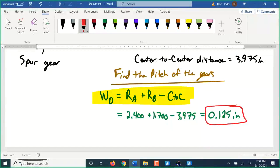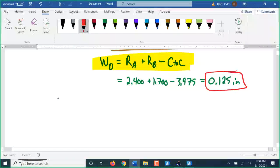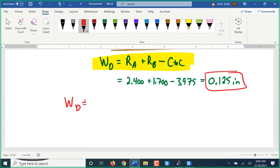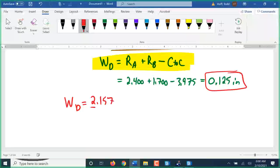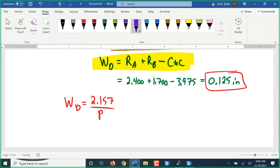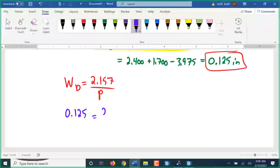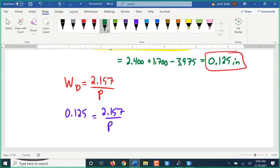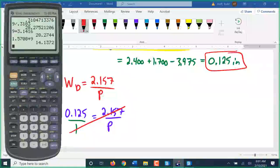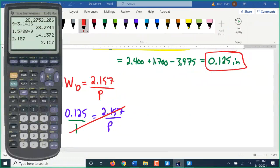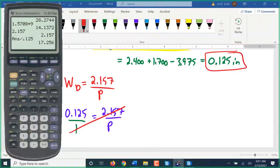Now that we have that working depth, we can go back to our formulas and find the pitch. Working depth equals 2.157 divided by the pitch. We have that situation where the number we're looking for is on bottom. We're going to put the 0.125 in for the working depth. To solve for P, I'm just going to make it a proportion again. 1 times 2.157 divided by the 0.125 gives us a pitch of 17.256.